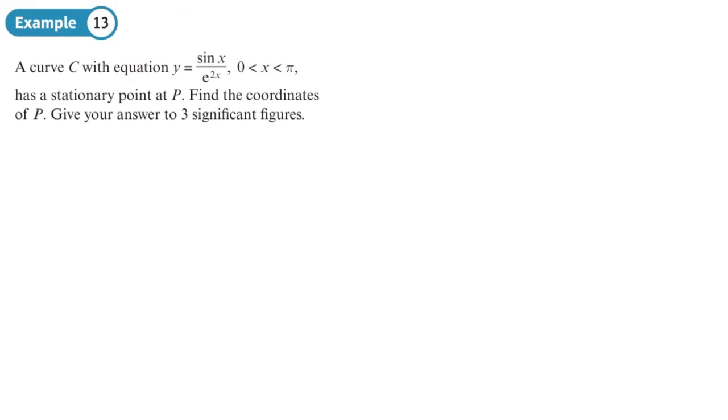We are going to use the correct notation now rather than top and bottom. So u equals sin x, v equals e^(2x). du/dx is going to be cos x, and dv/dx is going to be 2e^(2x). Remember we get the number here at the front by differentiating the power. Differentiate these two, put the two in the front, plug that into the quotient rule.